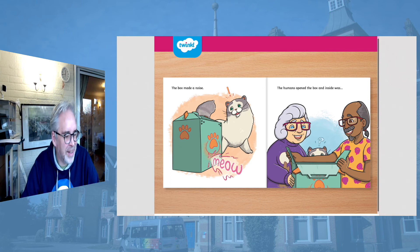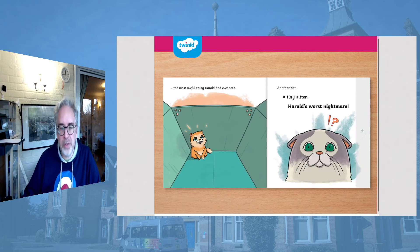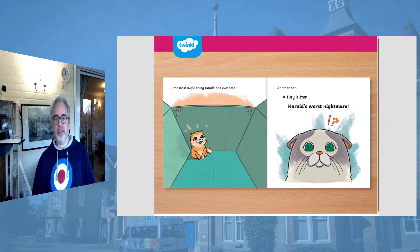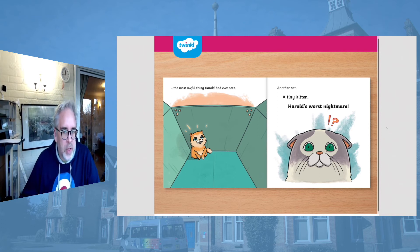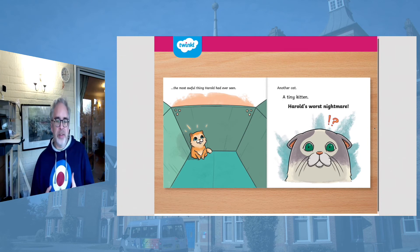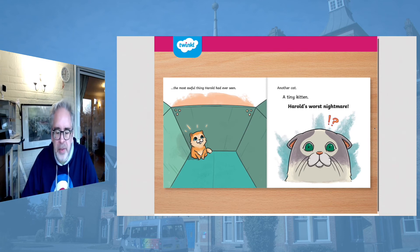That's good! Shall we try again? Ready? One, two, three — meow! The humans opened the box and inside was the most awful thing Harold had ever seen: another cat, a tiny kitten — Harold's worst nightmare. Why do you think the tiny cat might be Harold's worst nightmare? This is the really good thing about stories — you can listen, look at the pictures, and think for yourself what the correct answer is. With stories, a lot of it is down to our imagination. That's what makes them so brilliant.